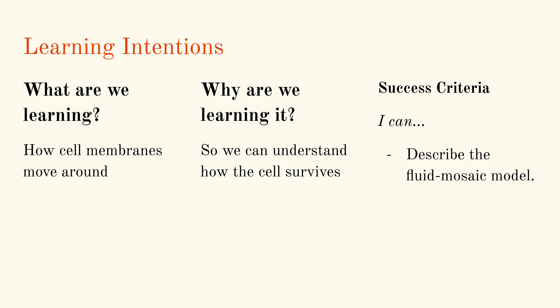Today we're going to talk about how the parts of a cell membrane can move around. We're continuing to talk about this so we can understand how the cell can survive. Our success criteria is being able to describe the fluid mosaic model.